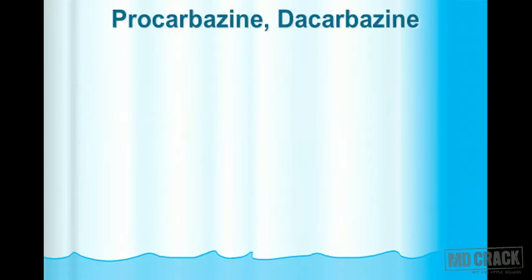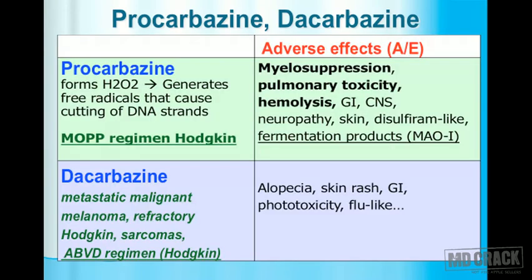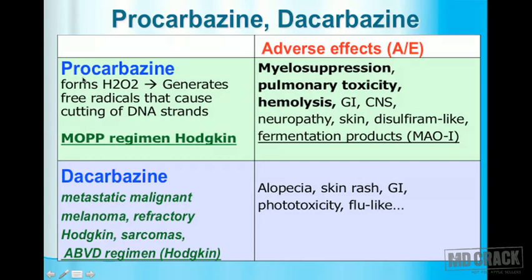Procarbazine and dacarbazine are both used in Hodgkin's lymphoma. Procarbazine is used in the MOPP regimen for Hodgkin's, and dacarbazine is the 'D' in the ABVD regimen. So: procarbazine in MOPP, dacarbazine in ABVD — these are the two main regimens for Hodgkin's lymphoma.